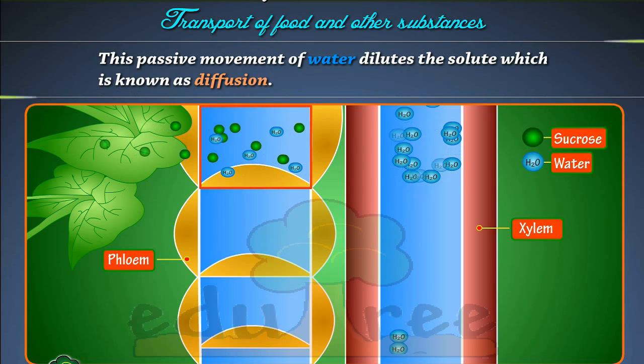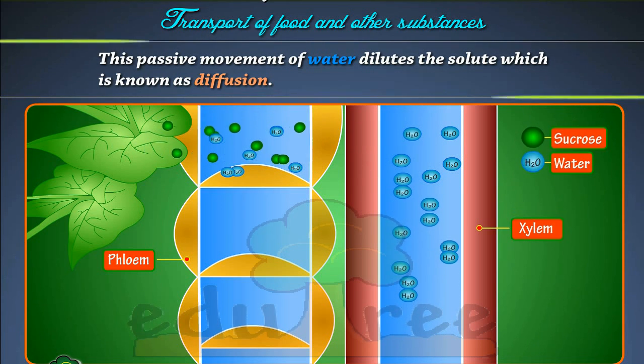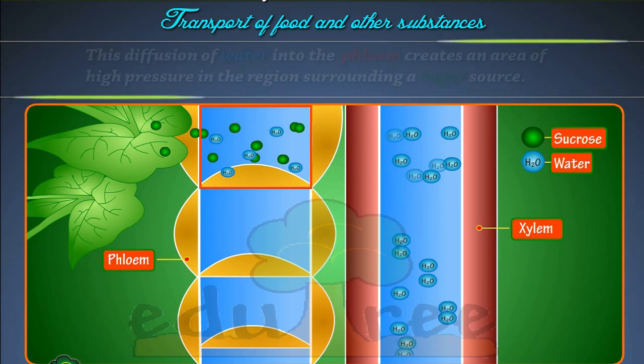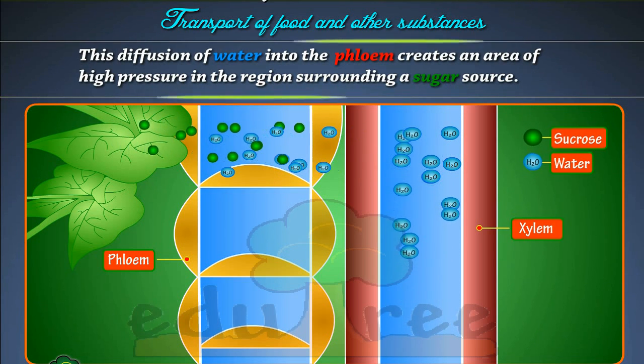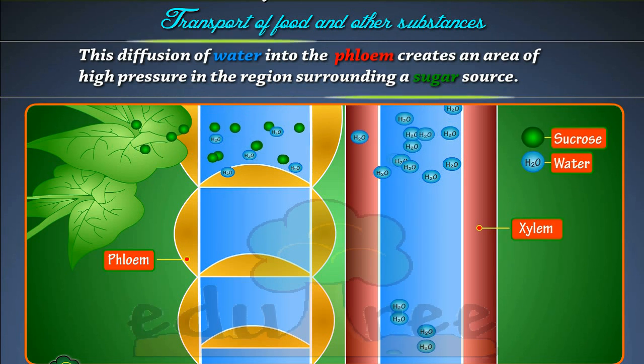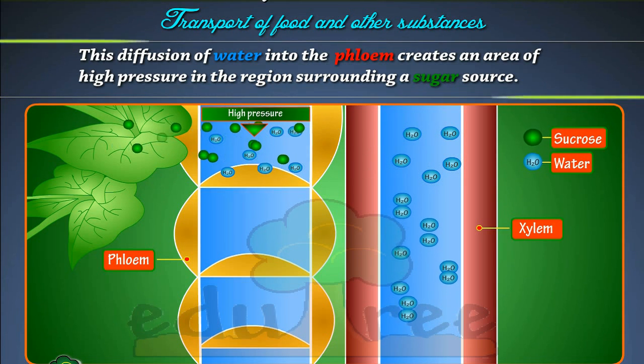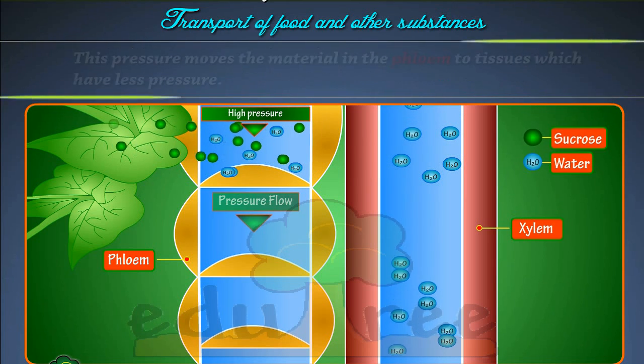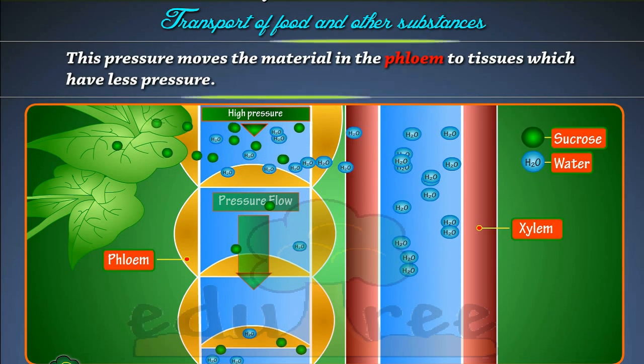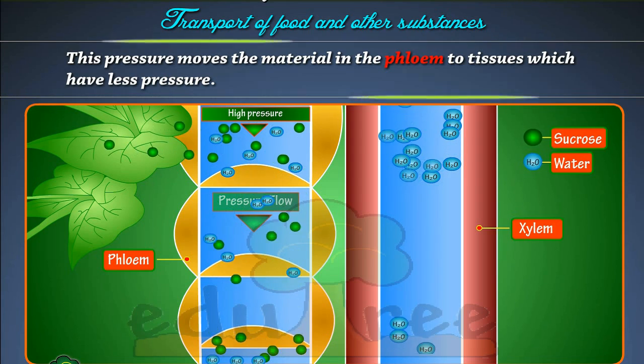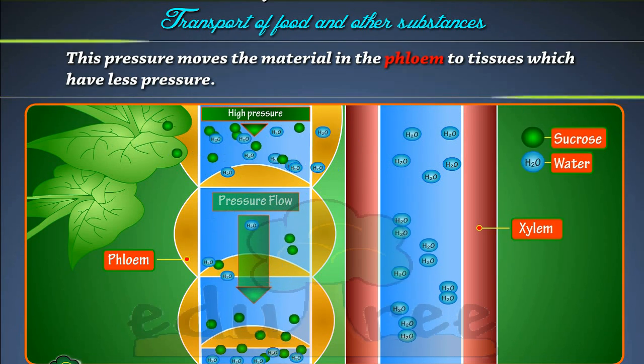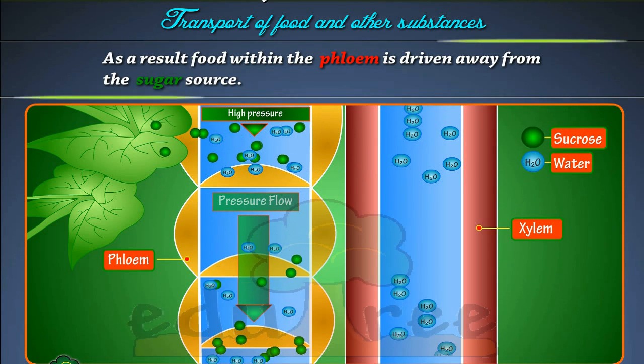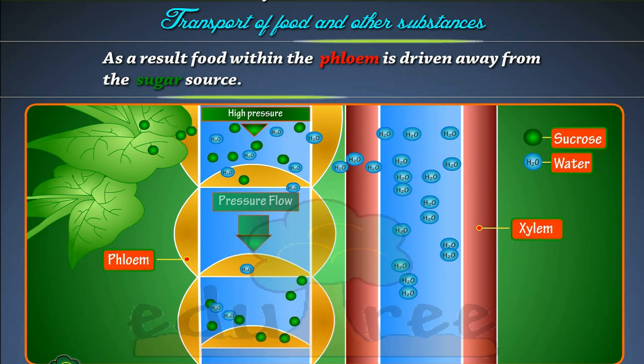This passive movement of water dilutes the solute, which is known as diffusion. This diffusion of water into the phloem creates an area of high pressure in the region surrounding a sugar source. This pressure moves the material in the phloem to tissues which have less pressure. As a result, food within the phloem is driven away from the sugar